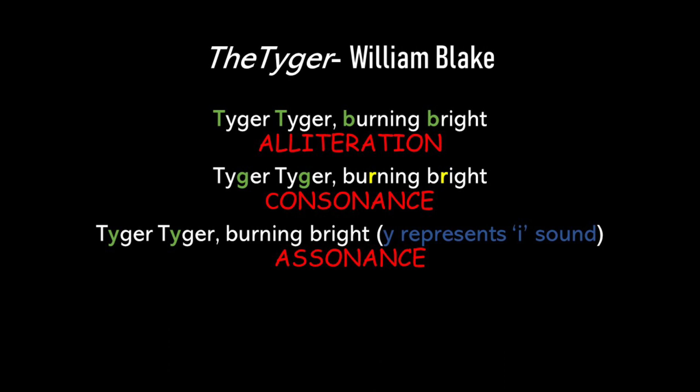Our next example has been taken from a very famous poem, The Tyger by William Blake. The first line of this poem can be taken as an example of alliteration, Consonance, as well as Assonance. The first line reads: Tiger Tiger burning bright. You can see on the screen that the letters T and B have been highlighted to show that the consonant sounds T and B have been repeated at the beginning of the neighbouring words.